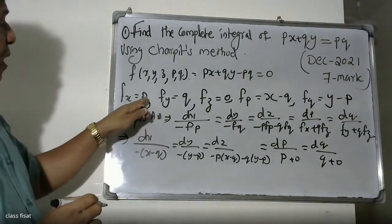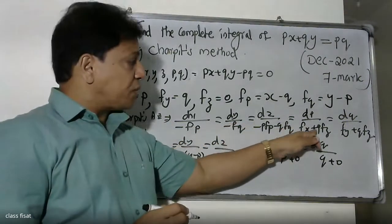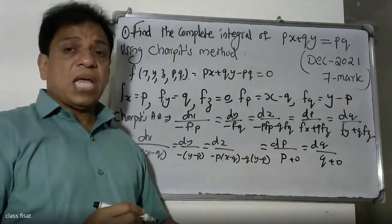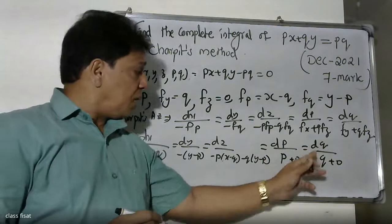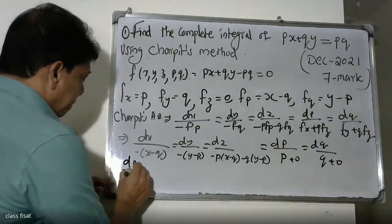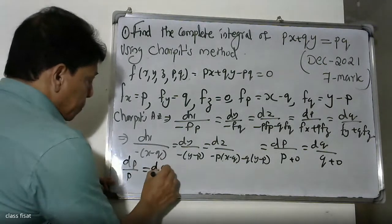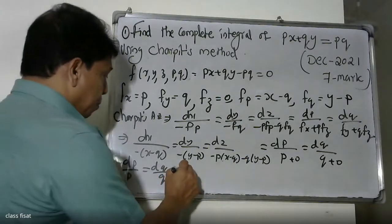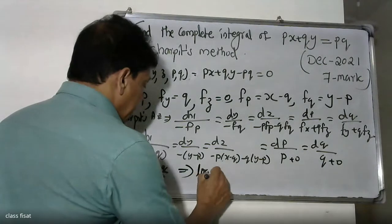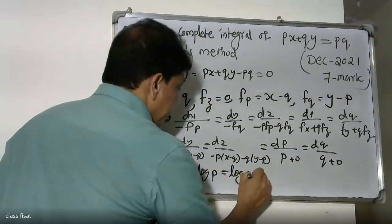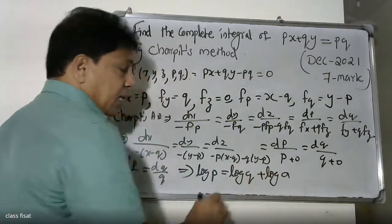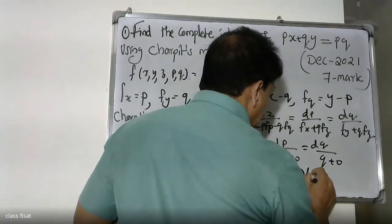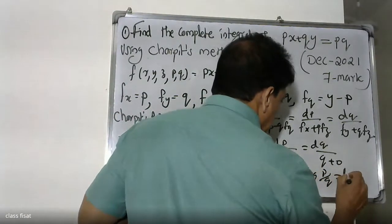Taking the ratio dp by p equals dq by q. This is the answer in the first step — it is the variable separable form. Integrating both sides: log p equals log q plus log a, where a is a constant. This gives log p by q equals log a.